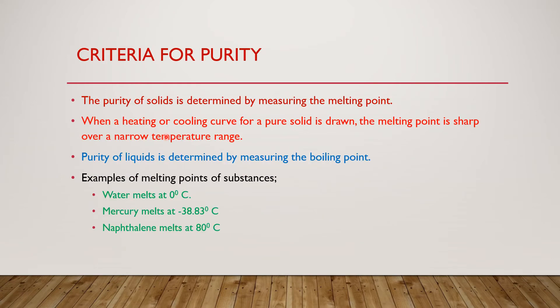Now we're going to determine the criteria for purity. Criteria for purity is whereby we want to determine if a solid or a liquid is pure — meaning it is made up of one substance. The purity of solids is determined by the melting point, while the purity of liquids is determined by the boiling point.